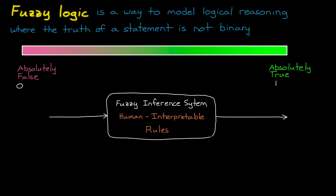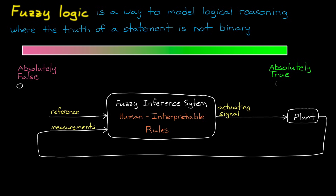These types of functions are popular for control applications, where a reference and measurements are fed in, and then using a set of rules based on fuzzy logic, some actuating signal is produced. But fuzzy logic is larger than just a control technique, as it can be used for any decision making process.